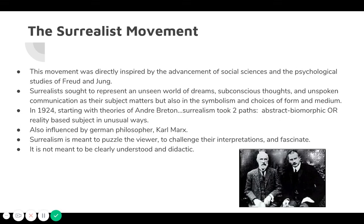Most importantly, you need to understand that the Surrealism movement had two different paths. One path was extremely abstract — they would call it biomorphic — and we're going to see some examples of that. The other path was reality-based subject matters painted or sculpted in very unusual ways. It is important to know there are two branches, two branches of style, within Surrealism.